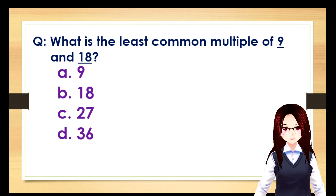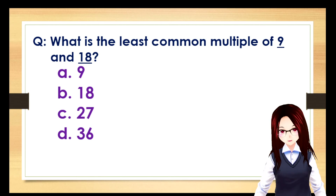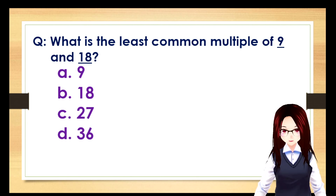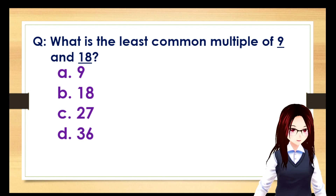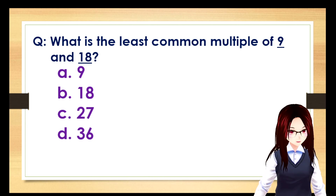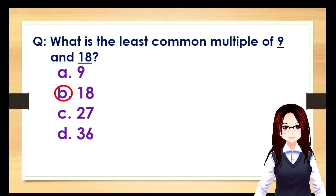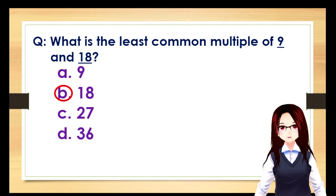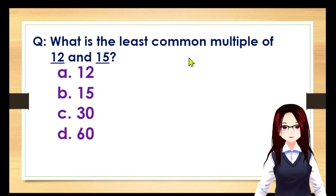Next: what is the least common multiple of 9 and 18? The correct answer is letter B: 18. Next: what is the least common multiple of 12 and 15? The correct answer is letter B: 60.